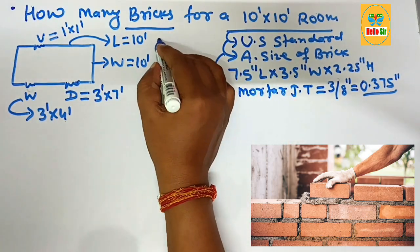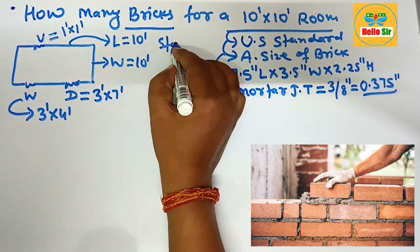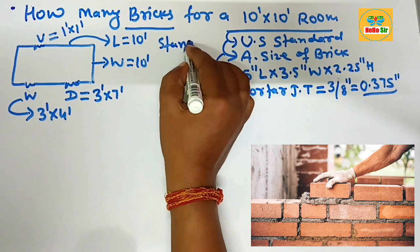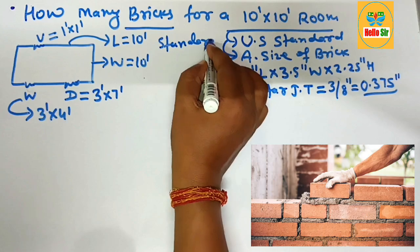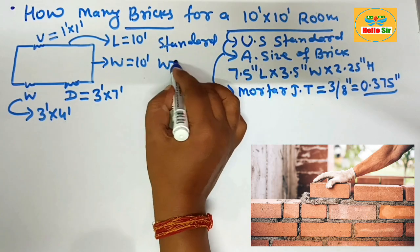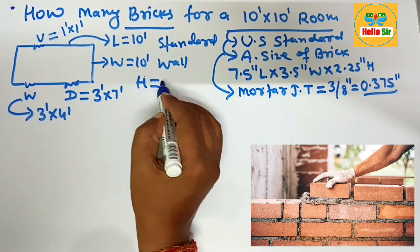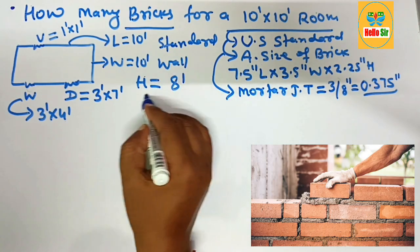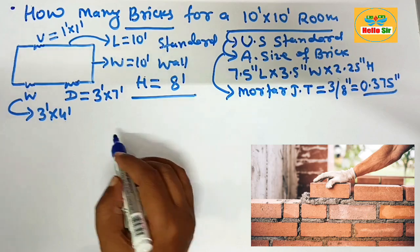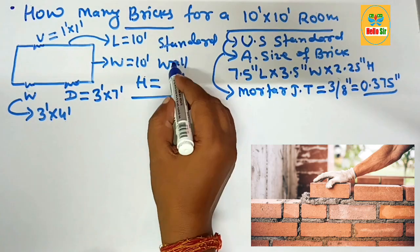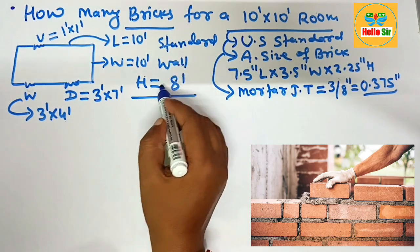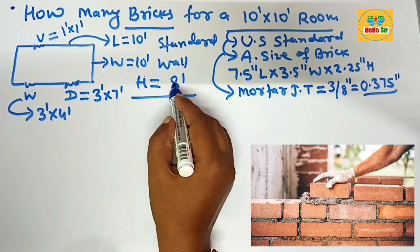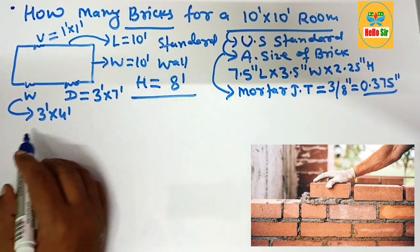The standard wall height in the United States is about 8 foot tall. Remember this — the wall height is about 8 foot tall.